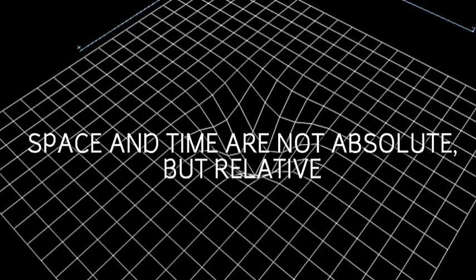So what is the theory of relativity? Now, the entire theory of relativity can be summarized in one line: space and time are not absolute, but they are dependent or relative to each other.